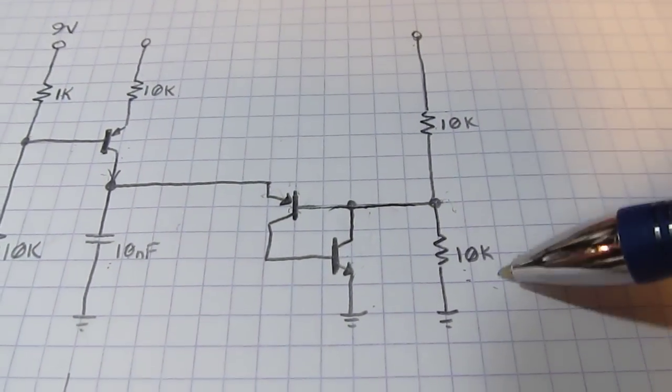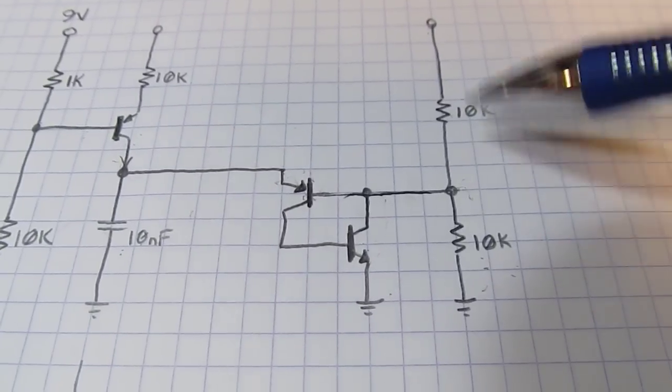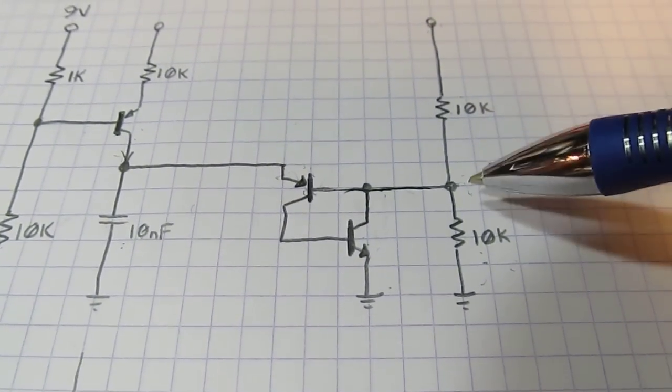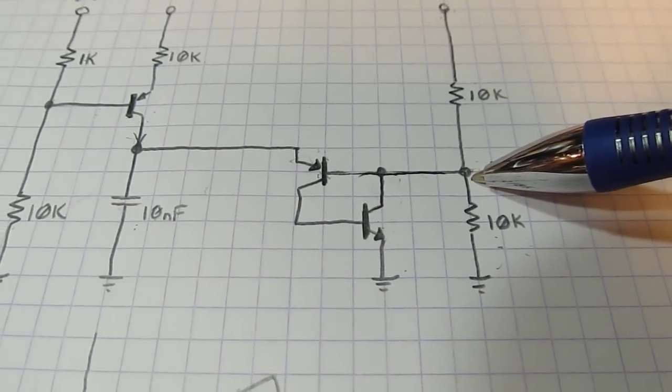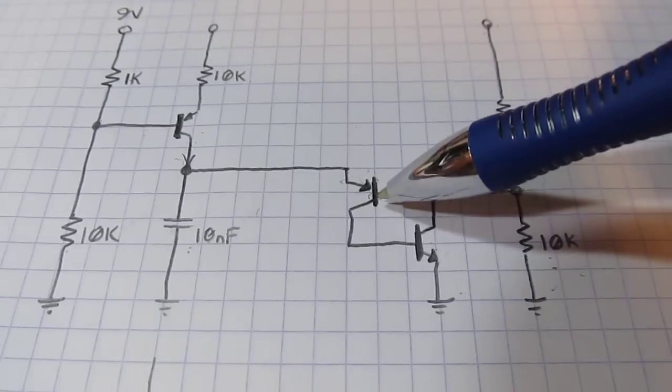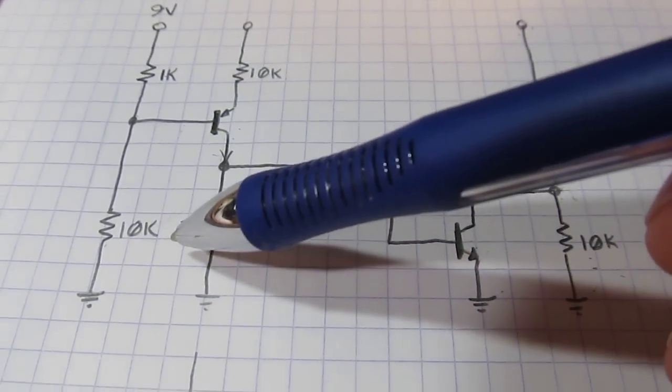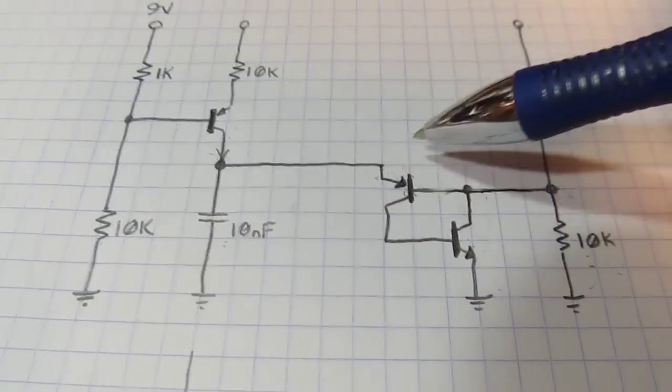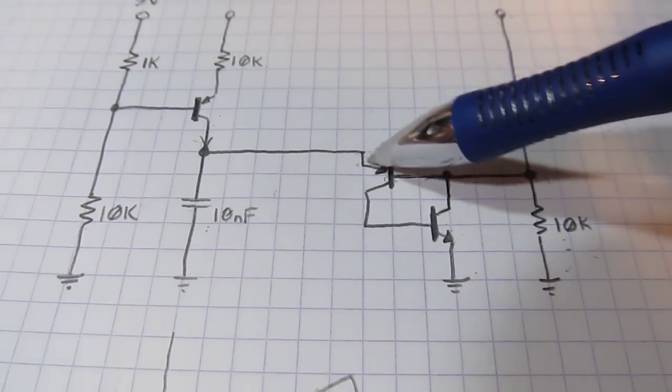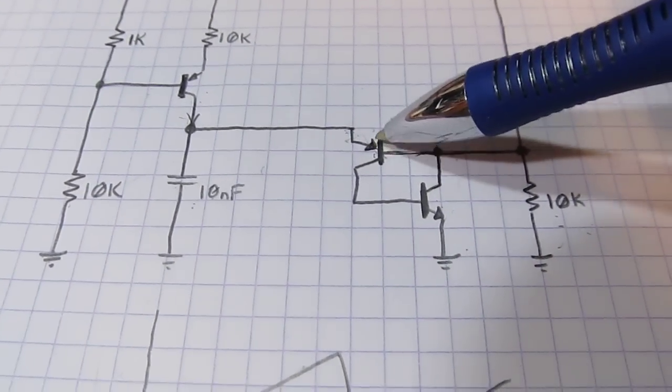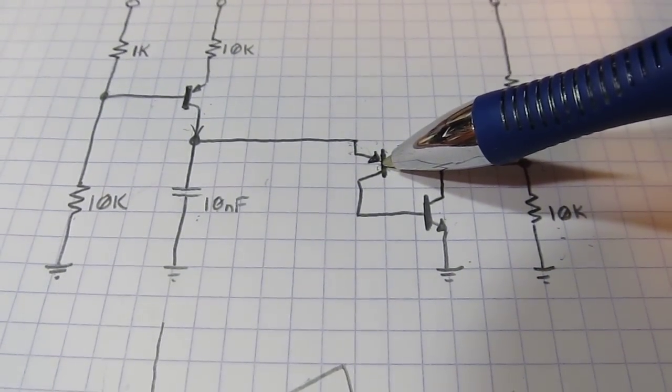So the way this works is this. I've got a voltage divider here which is basically splitting the positive rail. So I've got nine volts here, I've got about four and a half volts here. So I've got four and a half volts appearing at the base of this PNP. When the capacitor voltage increases to the point where it can turn this base emitter junction on, this PNP transistor starts conducting.